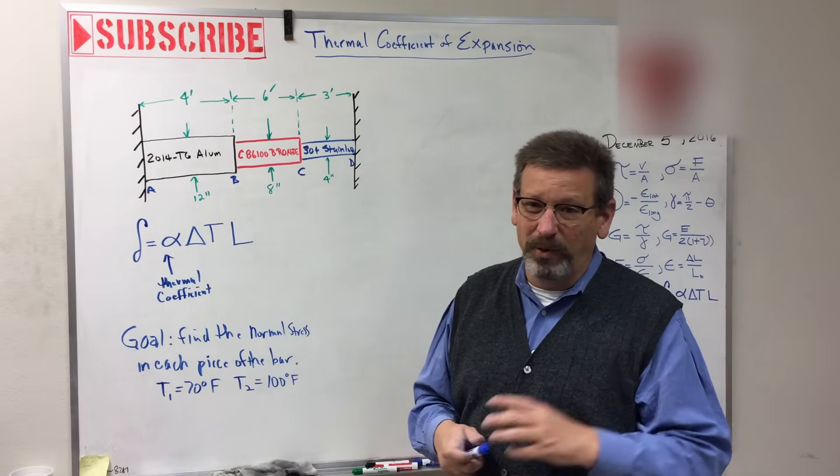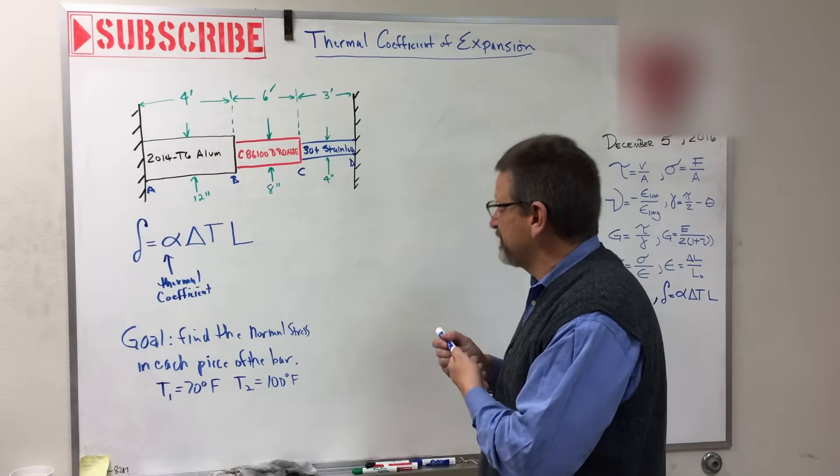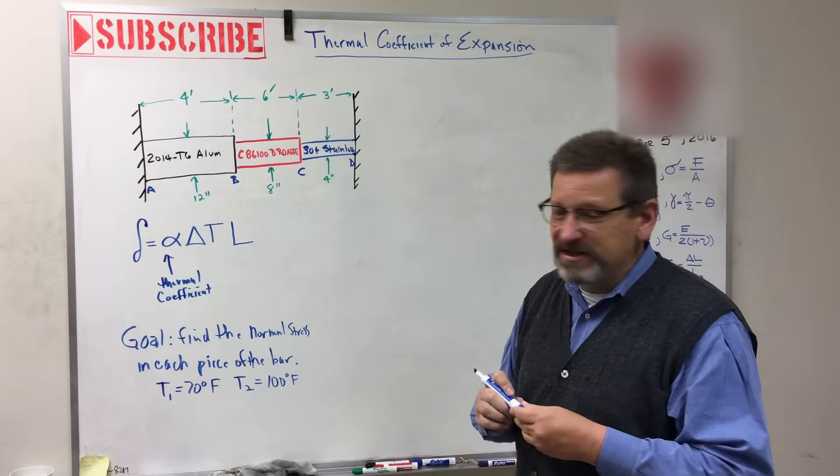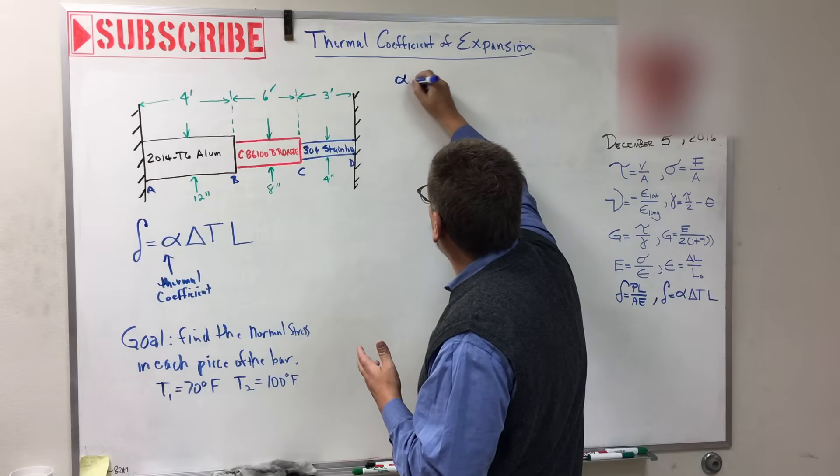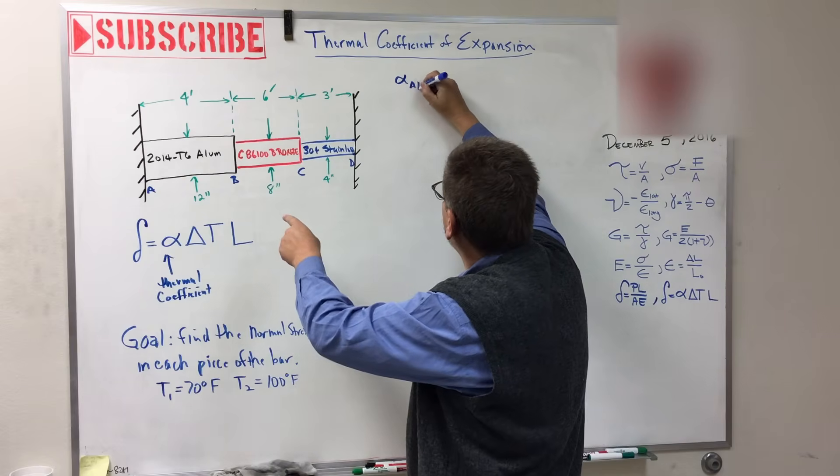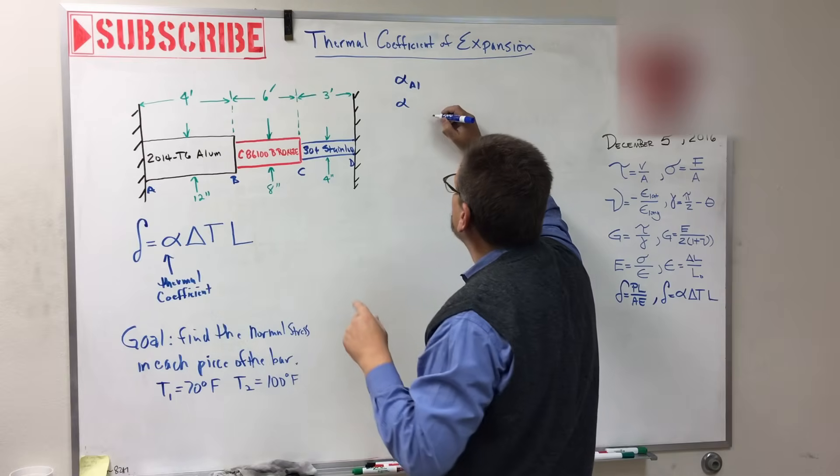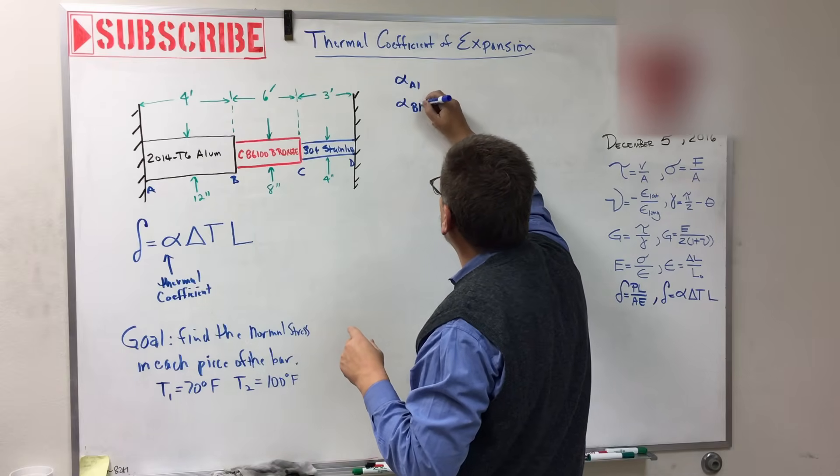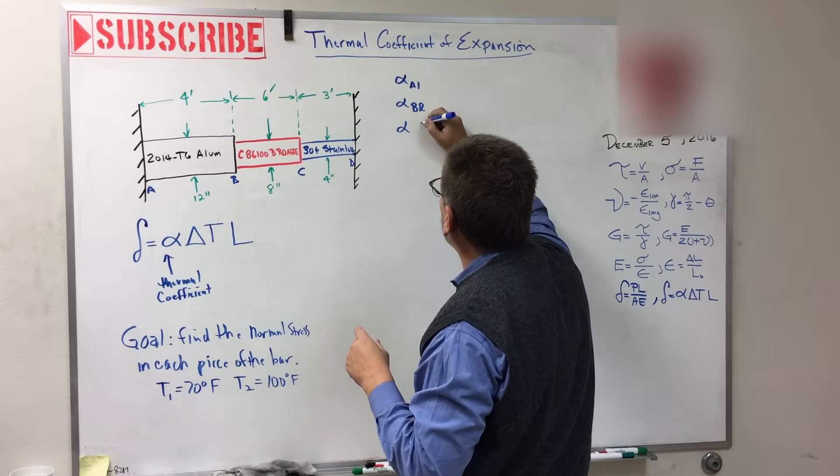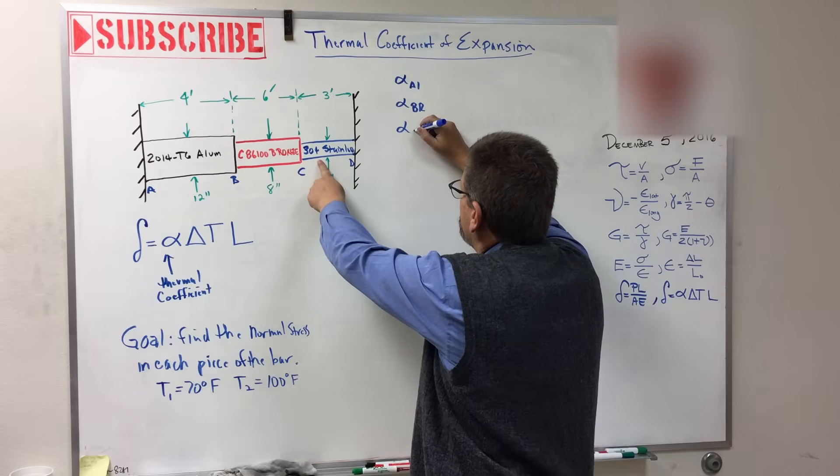They have different diameters and different lengths, and it's in between two walls. So what does that mean? Remember last time we did this, we talked about the extra equation that we need, our compatibility equation, so that when it grows between the walls, the walls push it back into shape. We're going to do that again too. So find the normal stress in each piece of the bar. The thing starts out at 70 degrees, and it goes to 100 degrees.